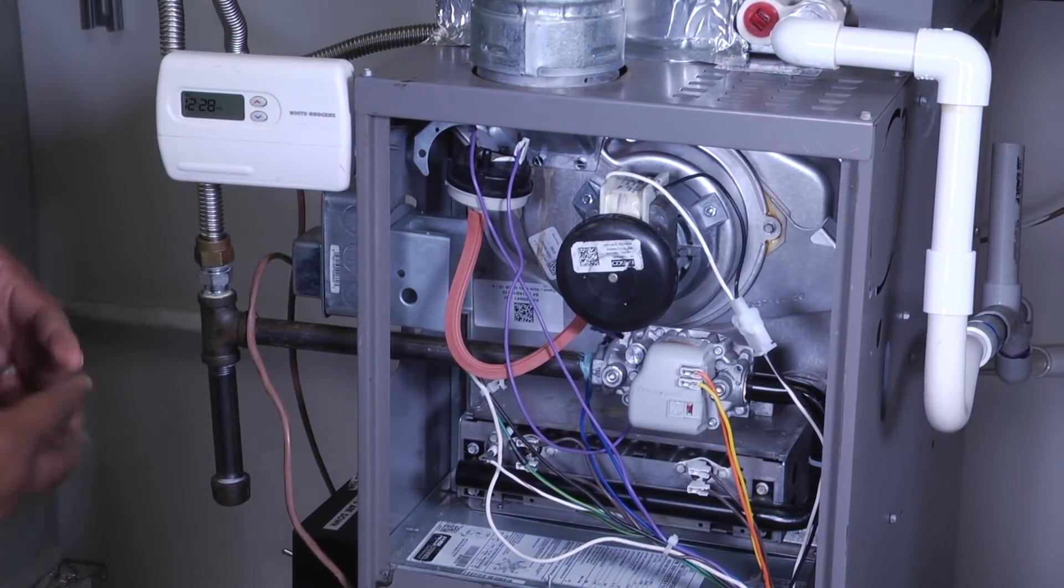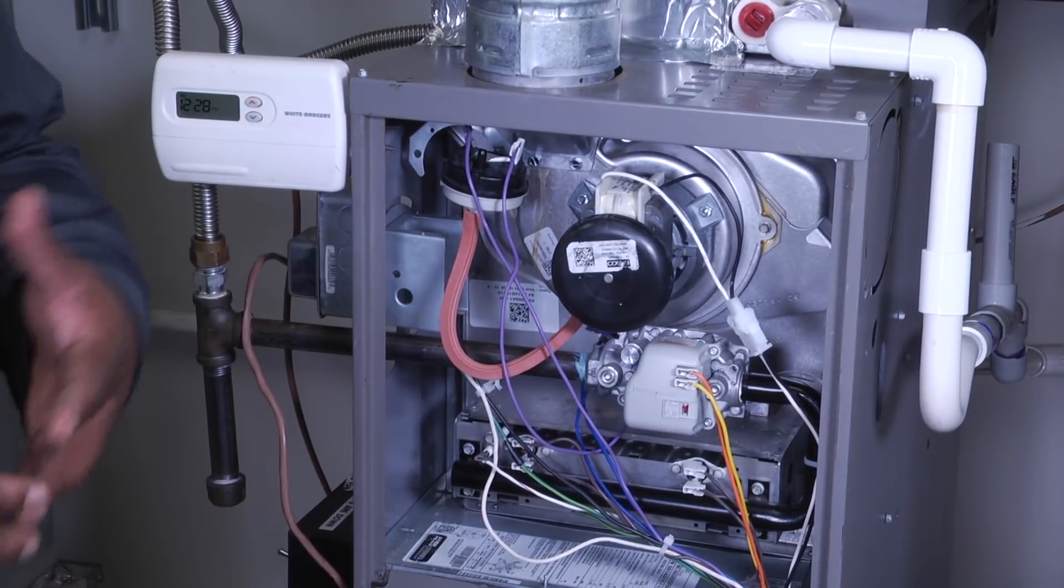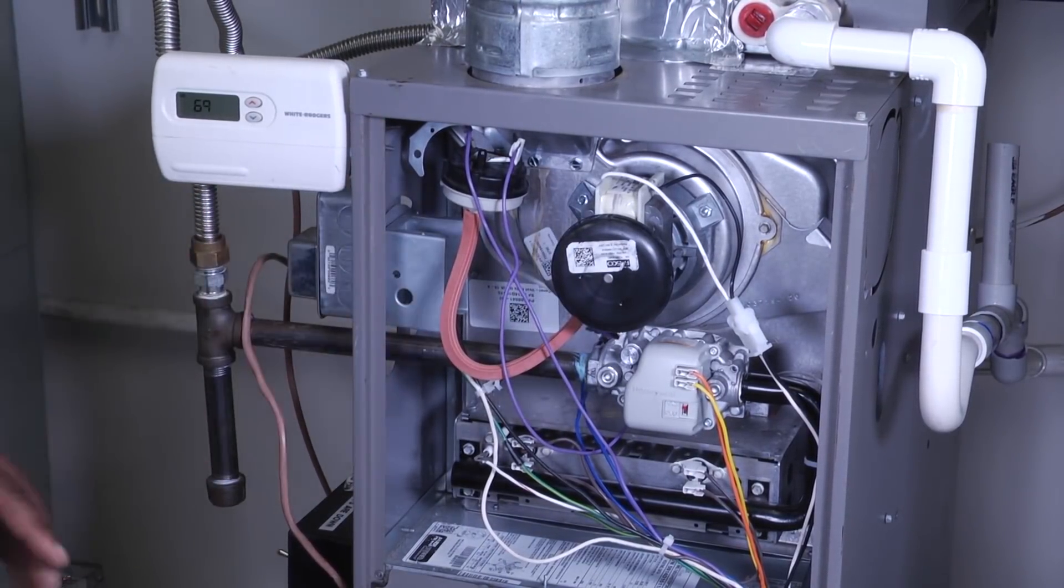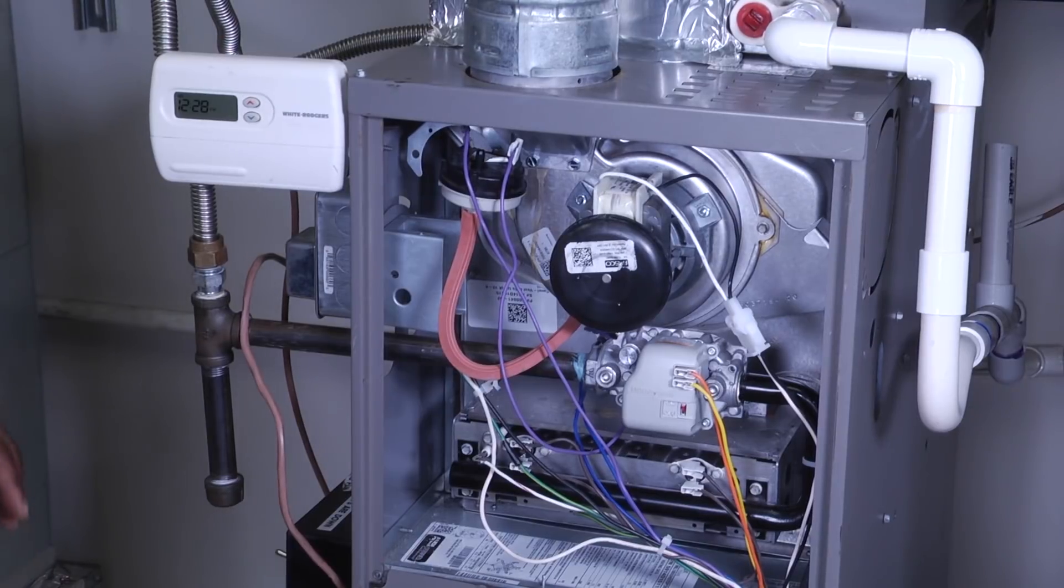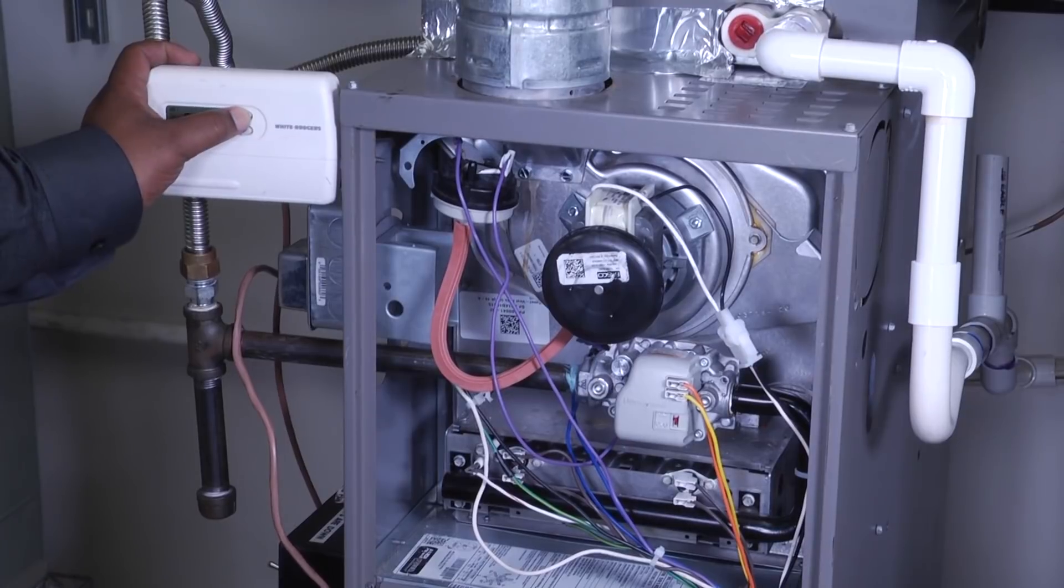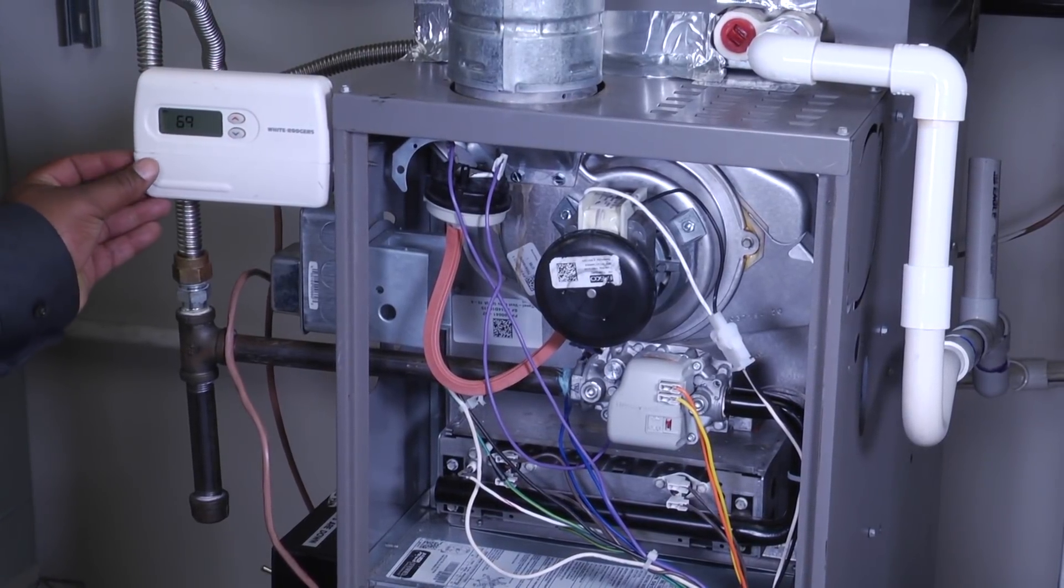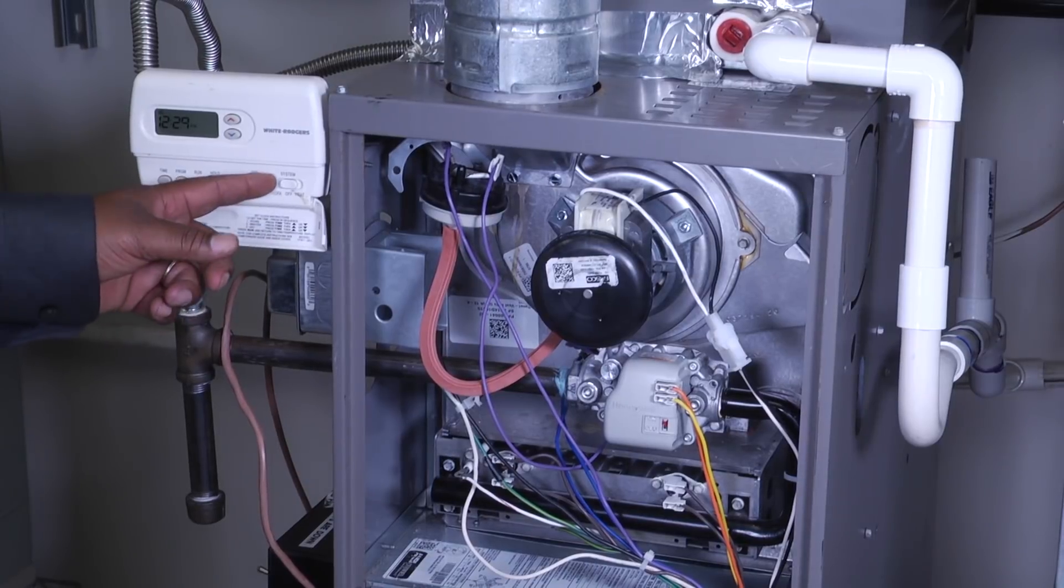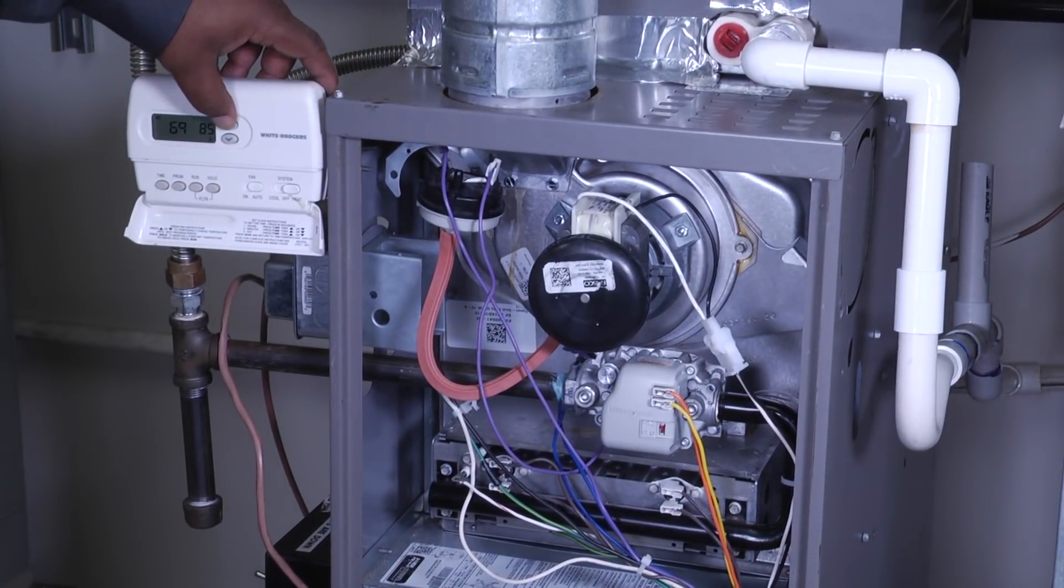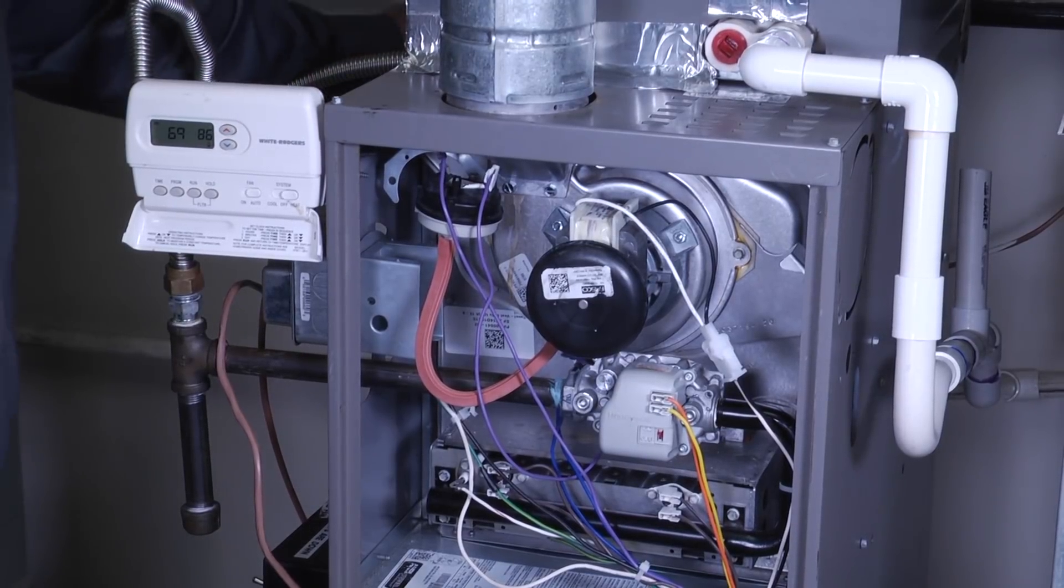Finally, once our thermostat reaches set temperature, the whole system will shut off until it is time for it to come on again. So we'll watch that happen as we go through here. First thing we'll do is raise our temperature up some, turn our system to heat, raise our temperature up, and make sure our gas is on.